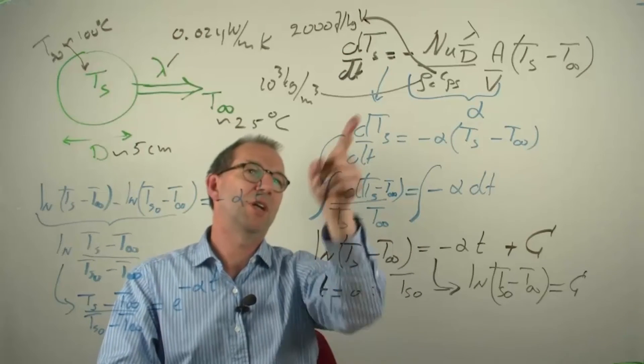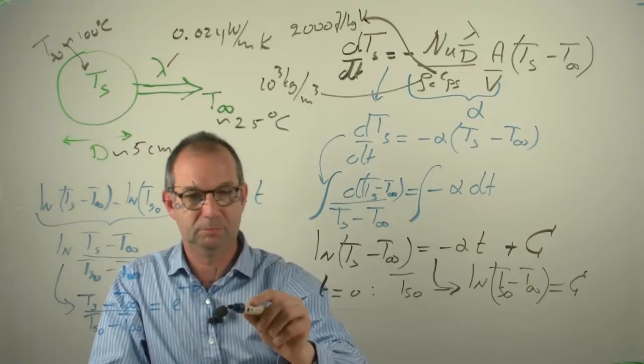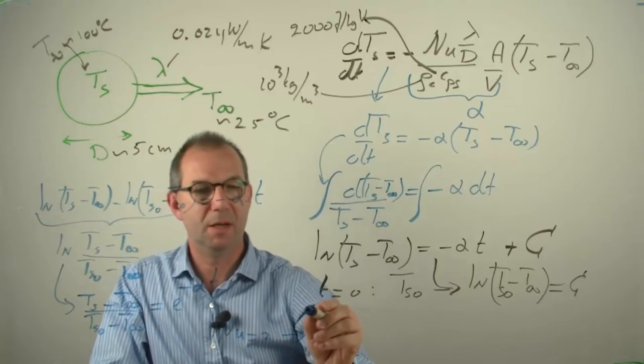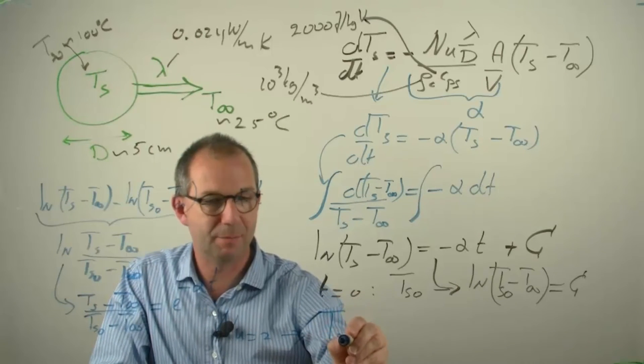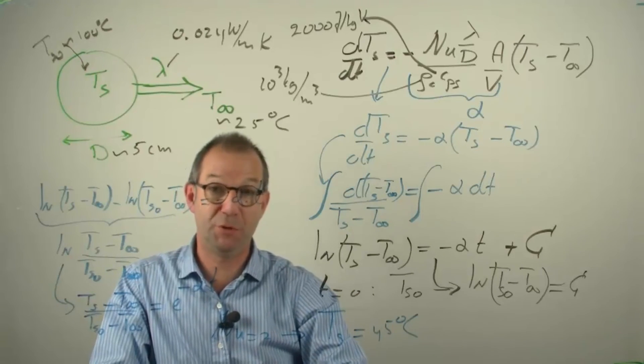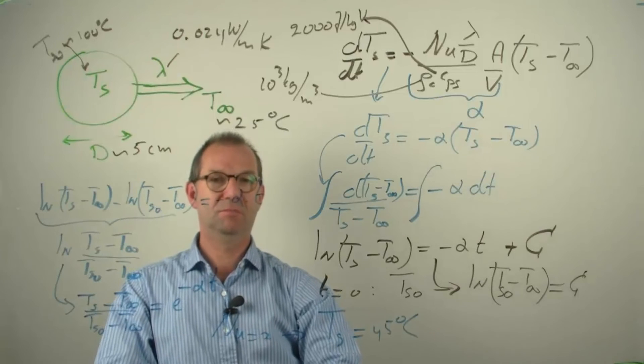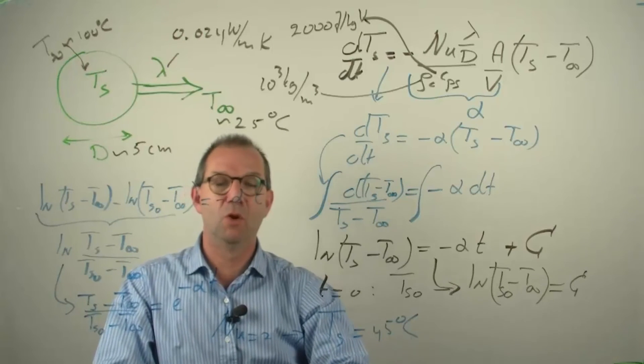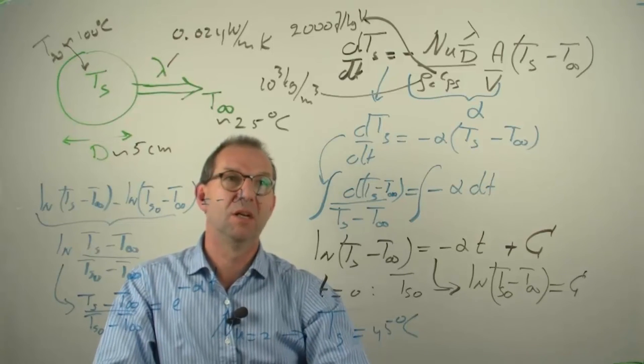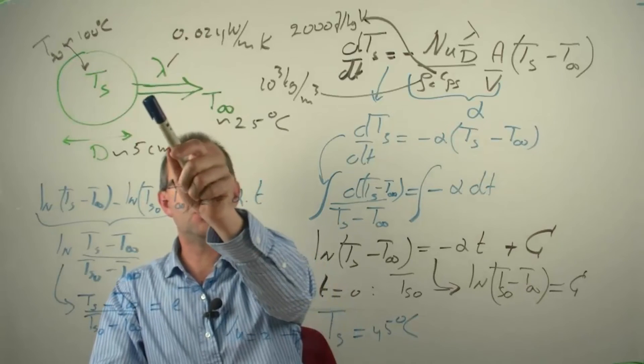The only unknown is now the Nusselt number. Actually, we derived everything for Nusselt is 2. If I fill that in, and I ask myself, when is the egg at 45 degrees. It's going to be pretty long. It's a few hours. The cooling down of an egg takes a few hours. I don't think so. If I make one for breakfast, and I put it on my plate, I don't have to wait until afternoon until I can eat it. Where is the catch here? Well, the Nusselt is 2 says that it's only conduction.